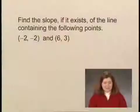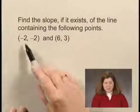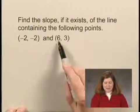In this exercise, we'll find the slope of a line given a couple of points on the line. We're asked to find the slope, if it exists, of the line containing the points (-2, -2) and (6, 3).